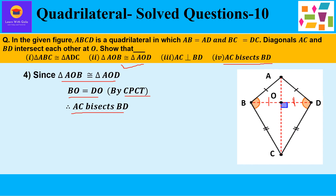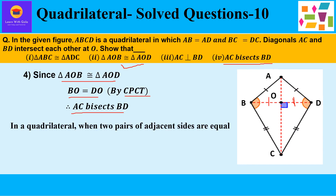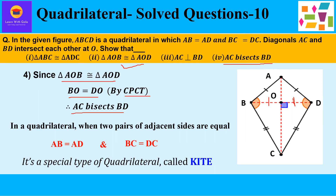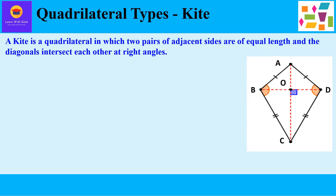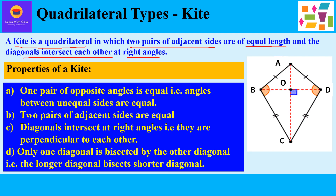These four parts have been proved. Now, if the question also asks which type of quadrilateral this is — since two pairs of adjacent sides are equal, AB equal to AD and BC equal to DC, it is a special type of quadrilateral called a kite. A kite is a quadrilateral in which two pairs of adjacent sides are of equal length and the diagonals intersect each other at right angles. We can also derive the properties of the kite from this very question.